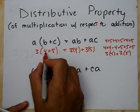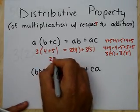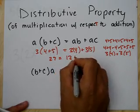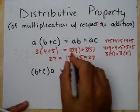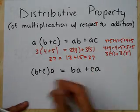Let's double check: 4 plus 5 is 9, and 9 times 3 is 27. On the other side, 3×4 is 12 plus 3×5 is 15 — that's 27. So we get 27 both ways.